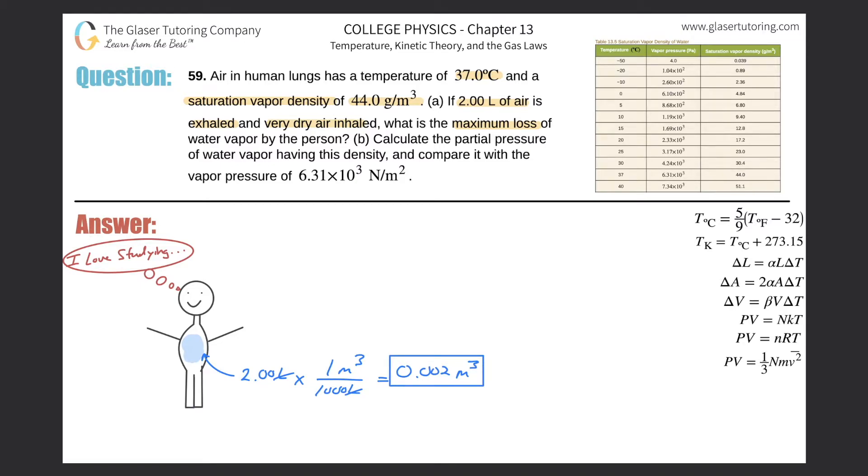This volume of air we can assume is totally saturated with water vapor—at its maximum saturation. If this volume of air were to be breathed out, and then the person inhales this volume of air into the lungs, the maximum loss would occur if this is maximally saturated with water vapor and this is minimally saturated or has no water vapor.